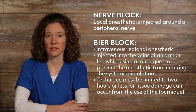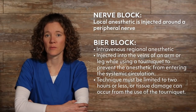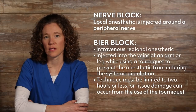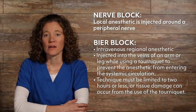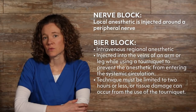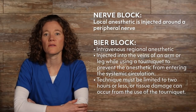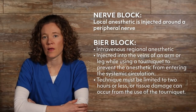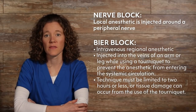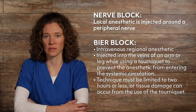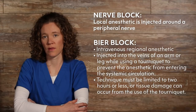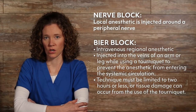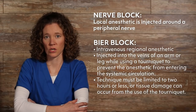Another regional anesthesia is the nerve block, in which the local anesthetic is injected around a peripheral nerve. Bier block is an intravenous regional anesthetic injected into the veins of an arm or leg while using a tourniquet to prevent the anesthetic from entering the systemic circulation. This technique must be limited to two hours or less, or tissue damage can occur from the use of the tourniquet.